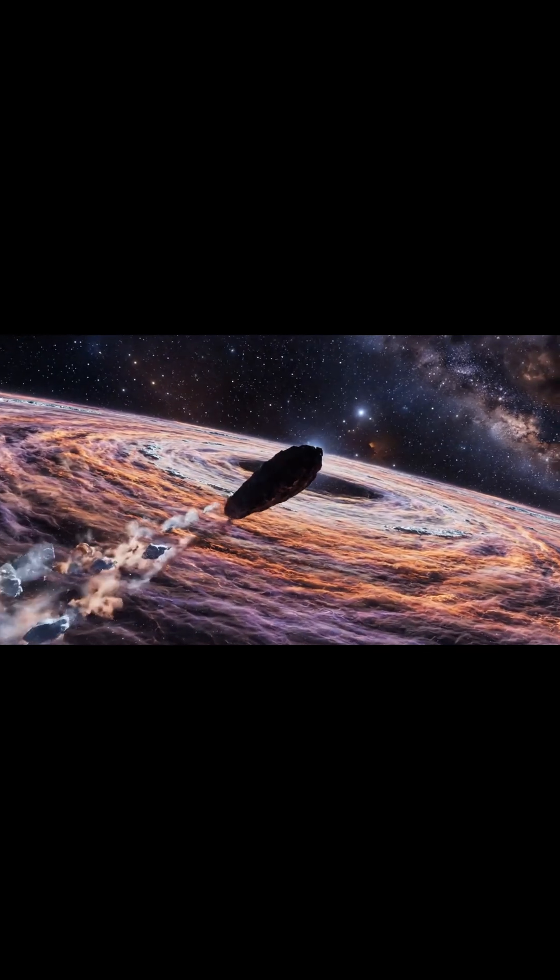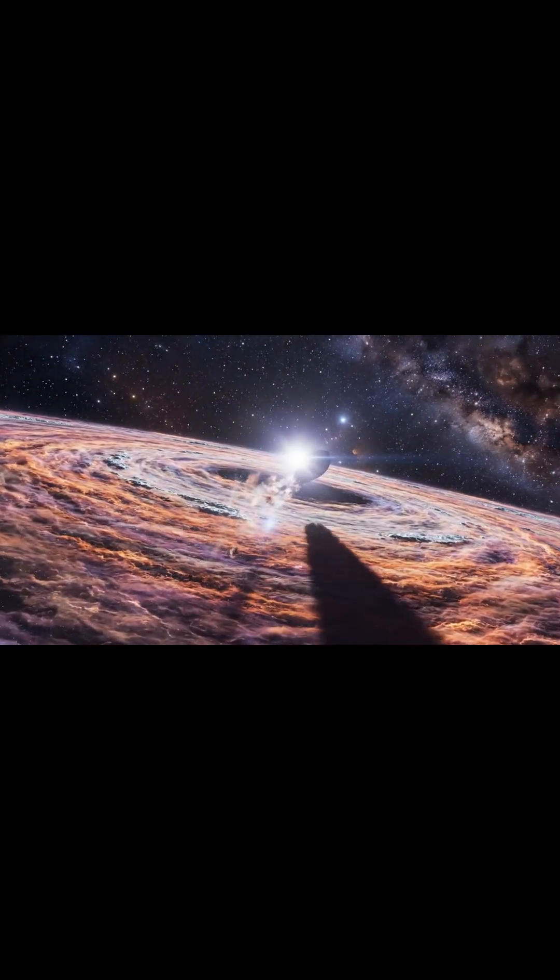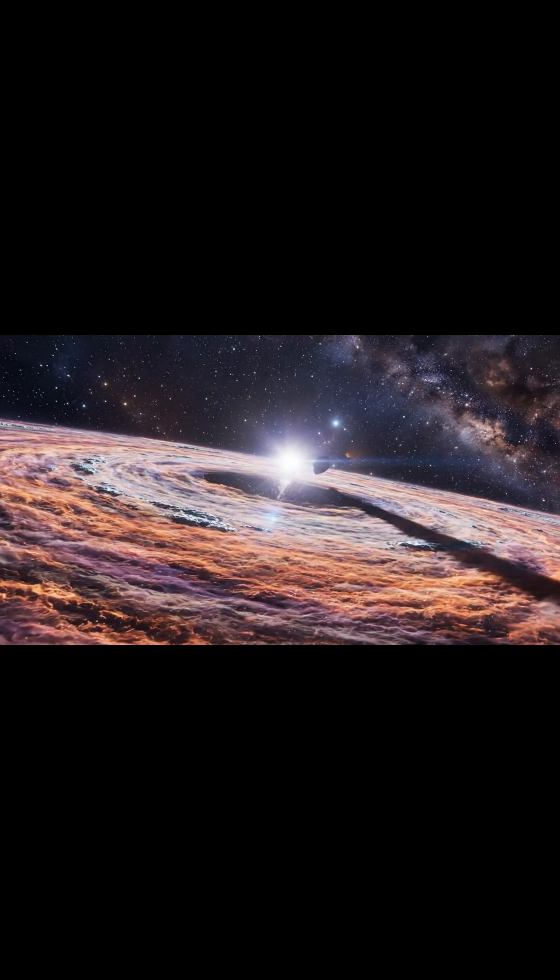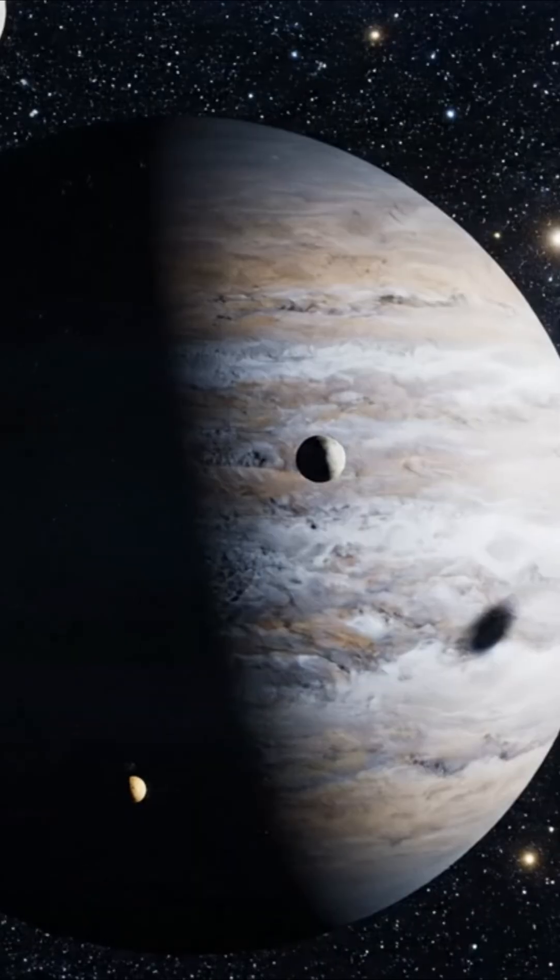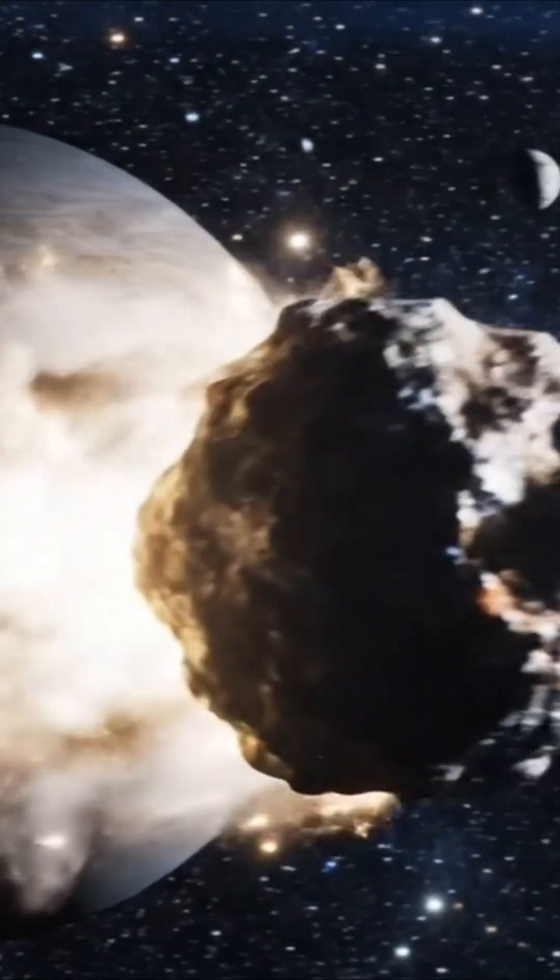C/2019 Y4 Atlas is moving backward through the solar system. Its orbit is tilted nearly 175 degrees. That alone proves it does not belong here.